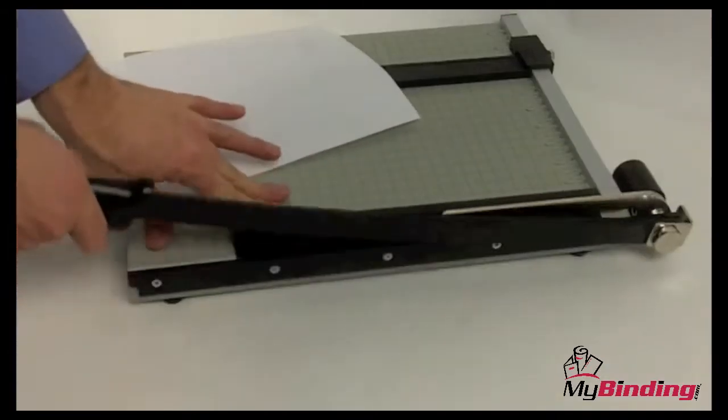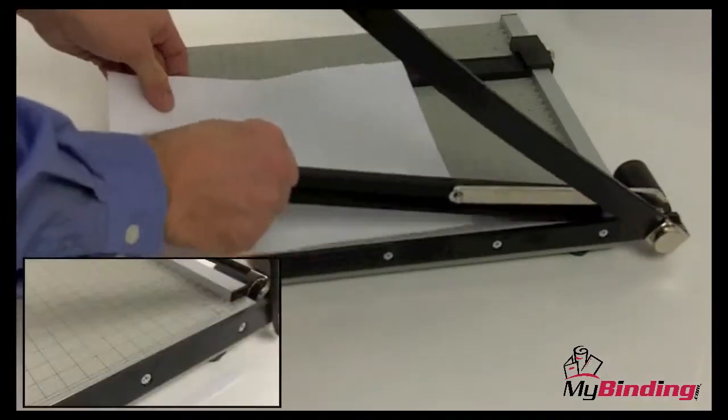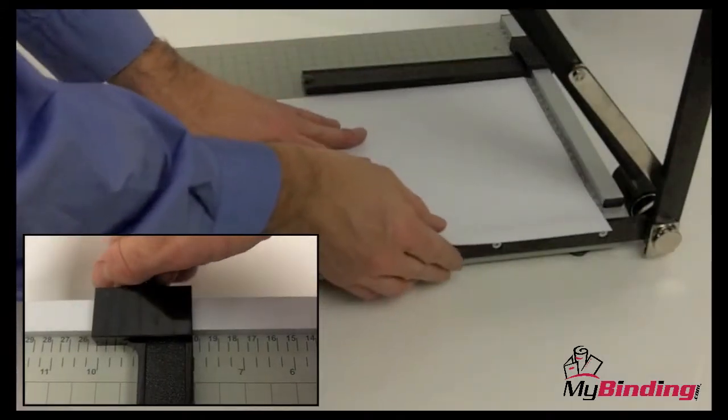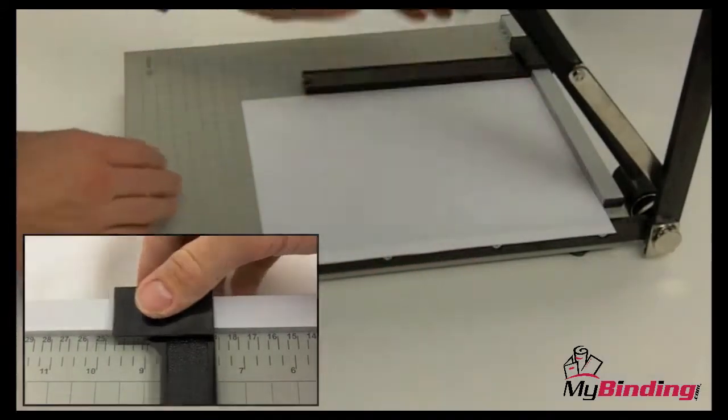Let's see the 15e in action. With your documents in order, place them on the work surface. Using the alignment grid, the fence, and the guide, line up your papers for the cut.